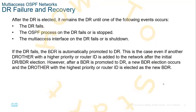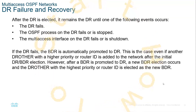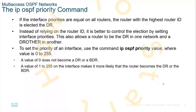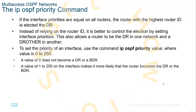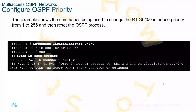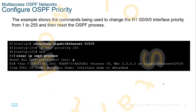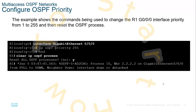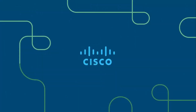For the IP OSPF priority command, we issue the ip ospf priority [value] command with a value between 0 and 255. A value of 0 prevents the interface from achieving DR or BDR status. This command is issued underneath an interface, and then we can clear the OSPF process to initiate an election. That is it for this module. If you have any questions or concerns, please reach out. Thank you.